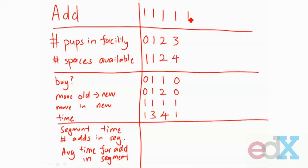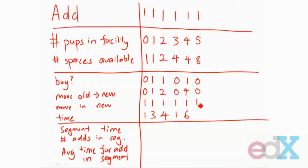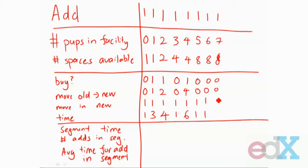Add another puppy: four puppies and four spaces, facility is full, so he needs to buy a new space, move over the four puppies, and move in the new one — that takes six units of time total (four plus one plus one). The next puppy: five puppies in a space for eight, so he does not need to buy anything or move anything — he just adds the new puppy into the space. Same thing for the next few operations: six puppies and space for eight, then seven, then eight — there's one space, so just add one.